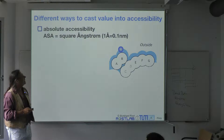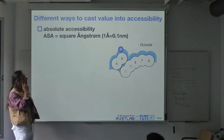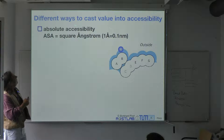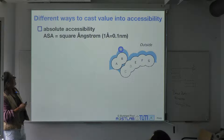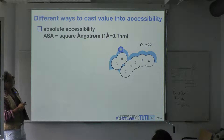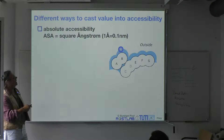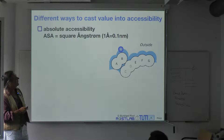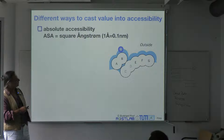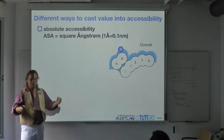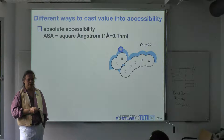This is essentially exactly how you compile solvent accessibility. The absolute accessibility is compiled in square angstroms — an angstrom is 0.1 nanometers. That is squared simply because you roll the ball over the surface.